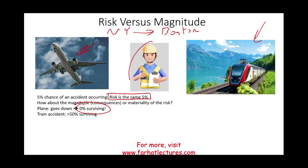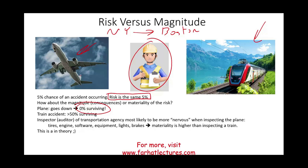Let's assume you are an inspector with a government transportation agency. As an inspector — analogous to an auditor — you're going to be more nervous when inspecting the plane. Why? Because the consequences of missing something are great. So you want to check everything: the tires, the engine, the software, the equipment, the lights, the brakes — as much as possible on the plane, because the materiality is higher than when inspecting a train.